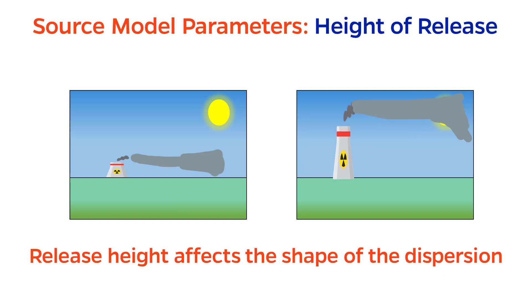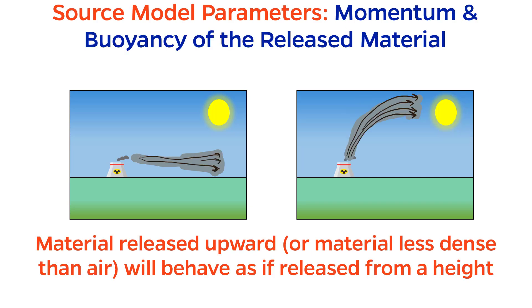The height of the release, visualized here, is yet another parameter. If the release occurs very high, paradoxically it is safer to be closer to the release, since it will take some time for the toxicant to diffuse to ground level. Finally, the momentum of the release and the buoyancy of the release chemical might also be factors. Both of these may make the cloud behave as if it were released from a height.